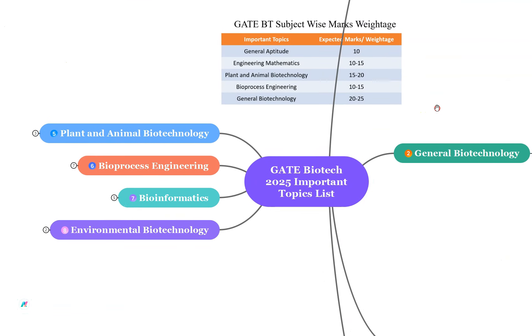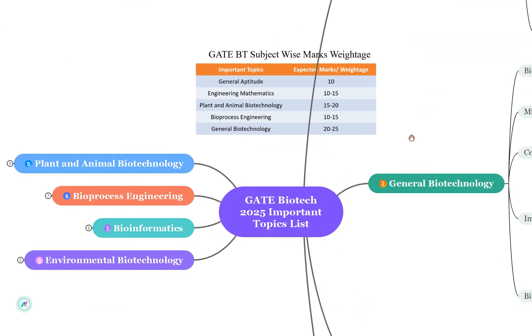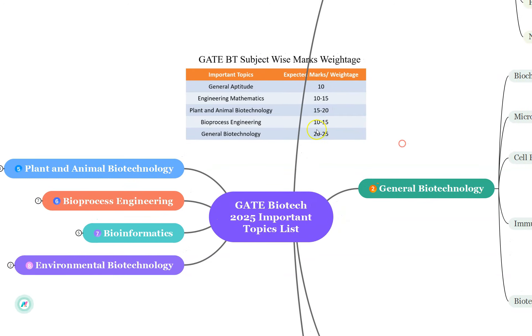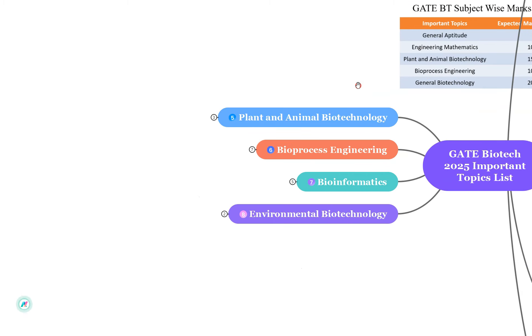We all know that for GATE BT, the marks weightage is mostly on Engineering Mathematics and Bioprocess Engineering. But also there is a good amount of weightage for General Biotechnology and Plant and Animal Biotechnology as well.